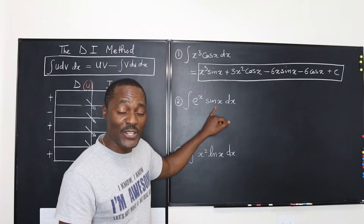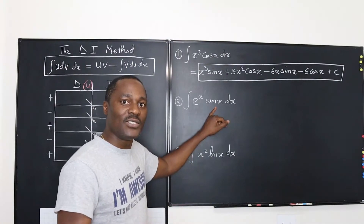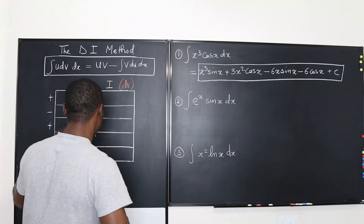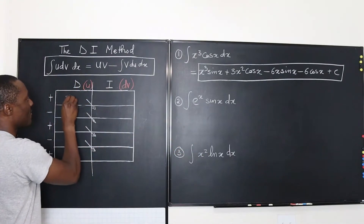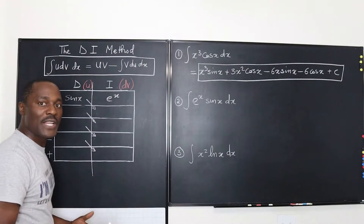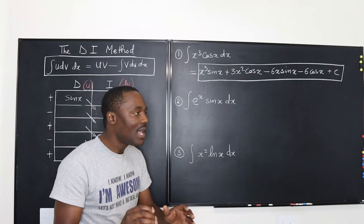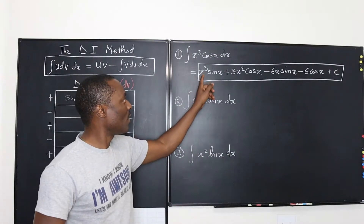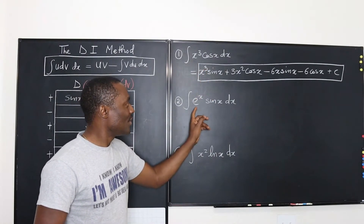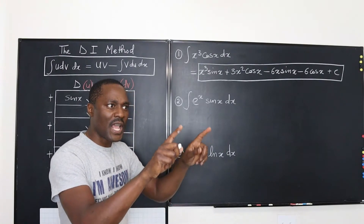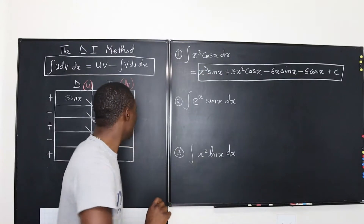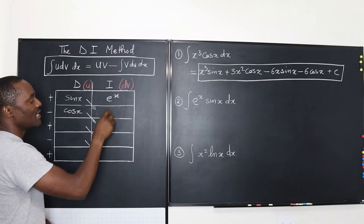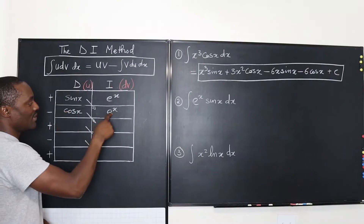Because I know that the derivative of sine X is cosine X and the derivative of cosine X is negative sine X, I'm just going to make sine X my U and E to the X my dV. I just keep integrating until I see something that looks like this again — once I see it, I stop. So this is our U. If we differentiate sine X, we get cosine X. If we integrate E to the X, we get E to the X. Well, this does not look like the original, so we keep going.